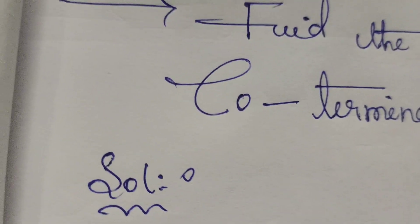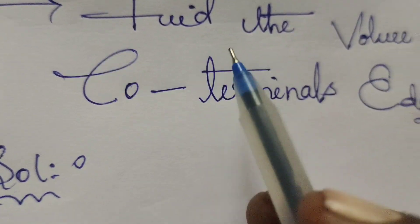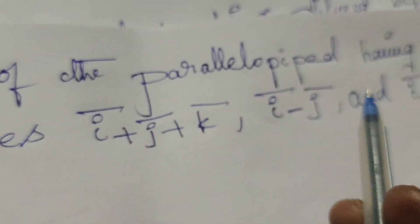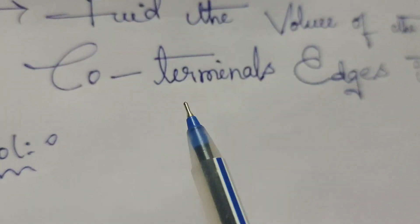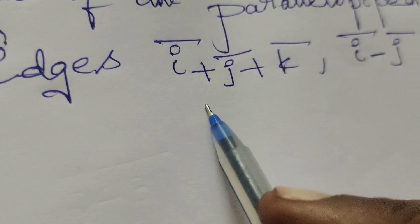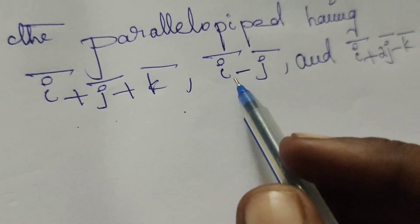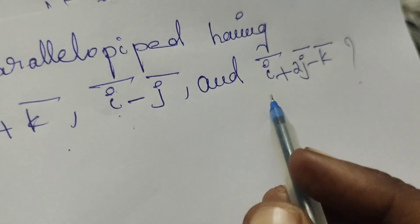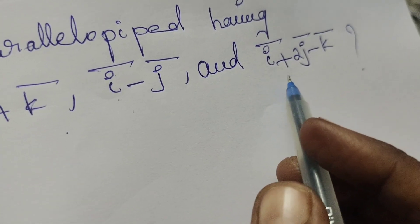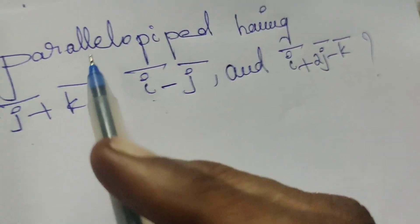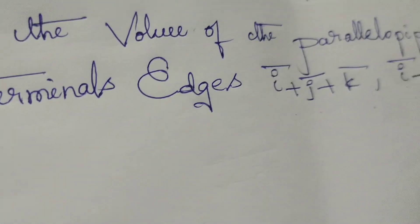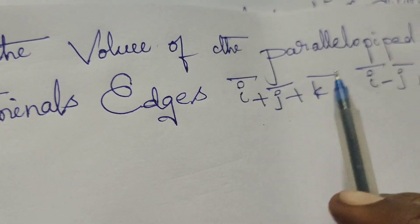This is Dr. Aethi. Today we are going to explain and find the volume of the parallelepiped having co-terminal edges: i-bar plus j-bar plus k-bar; next one is i-bar minus j-bar; and the third one is i-bar plus 2j-bar minus k-bar. These three are co-terminal edges of the parallelepiped.